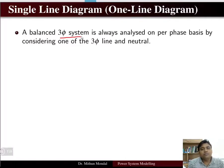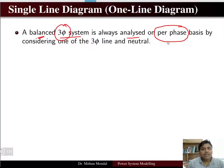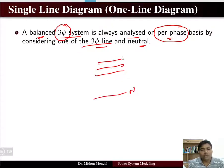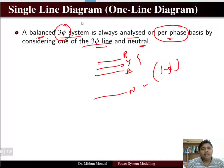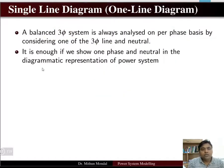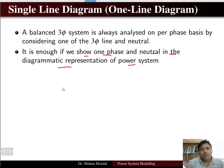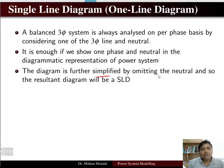A single line diagram represents a balanced three-phase system analyzed on a per-phase basis. In a three-phase system that is balanced, we can analyze on a per-phase basis by considering any one of the three-phase lines and the neutral. You can take any one line and the neutral to form a single-phase circuit. All single line diagrams are represented on a per-phase basis, so it is enough to show one phase and neutral.